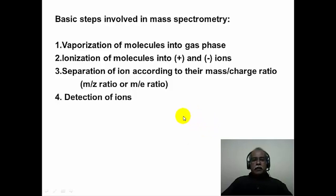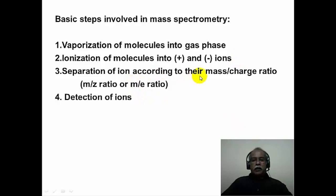The basic steps involved in mass spectrometry are as follows. The sample must be vaporized and brought into the gas phase, since mass spectrometry is a gas-phase technique. Ionization of molecules into positively or negatively charged ions is the next step — mass spectrometry is essentially about ions produced in the gas phase and the chemistry of those gas-phase ions. Then the ions are separated according to their mass-to-charge ratio, expressed as m/z in modern usage, or m/e in older textbooks.